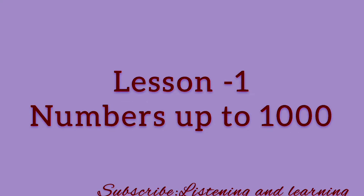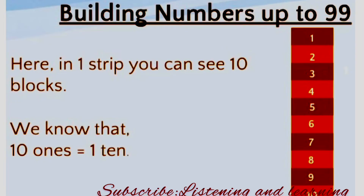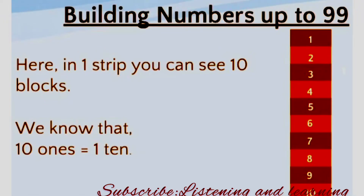Lesson 1: Numbers up to 1000 — Building Numbers up to 99. Here we can see 1 stripe that is up to 10 blocks: 1, 2, 3, 4, 5, 6, 7, 8, 9, 10. And we all know that 10 ones equal 1 ten. 10 ones make 1 ten.